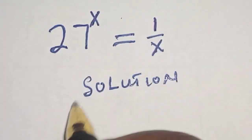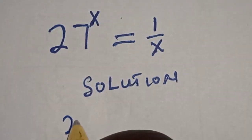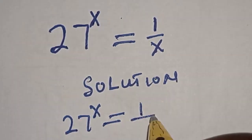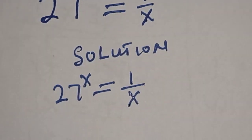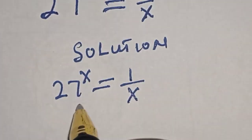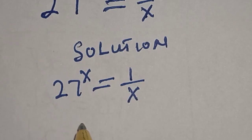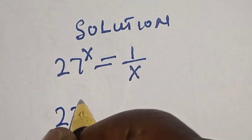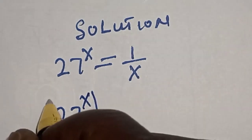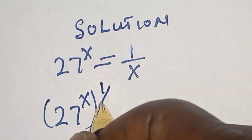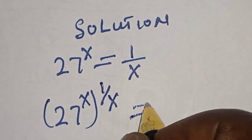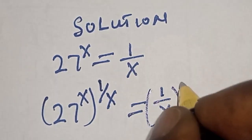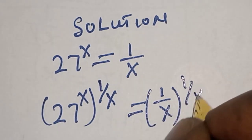This is the equation given: 27 raised to power x is equal to 1 divided by x. Multiply the power of both sides by 1 divided by x. That is, 27 raised to power x multiplied by 1 divided by x is equal to 1 divided by x raised to power 1 divided by x.